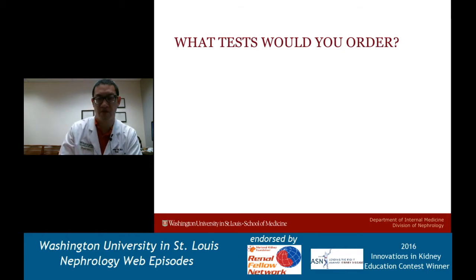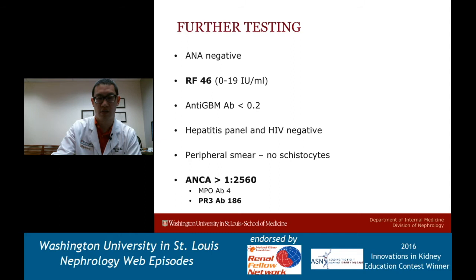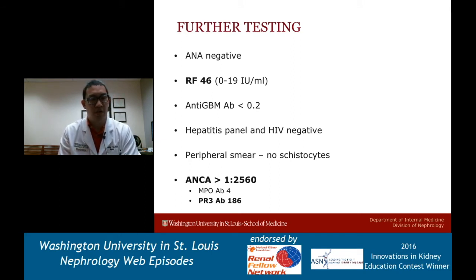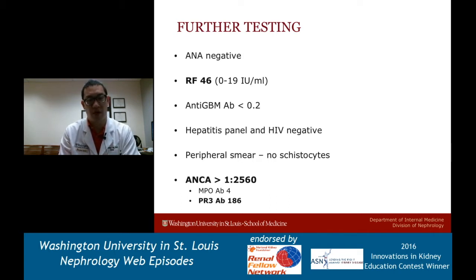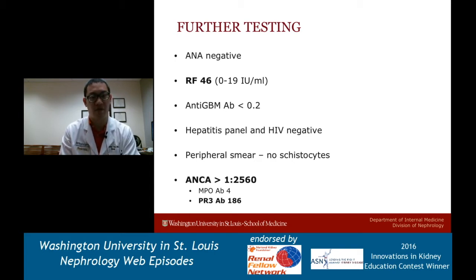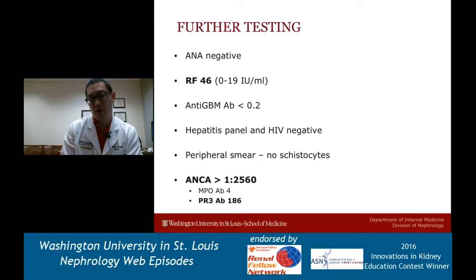She had the following blood work done: ANA, which was negative; rheumatoid factor, which was 46; anti-GBM antibody negative; hepatitis and HIV testing negative. Peripheral smear showed no schistocytes and no evidence of hemolysis. She had a very elevated ANCA, a titer of 1:2560, with a PR3 antibody of 186 - again, that's very high. So with that, we performed a kidney biopsy.